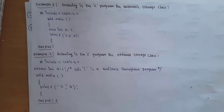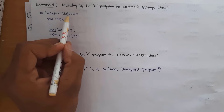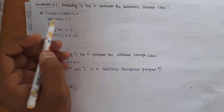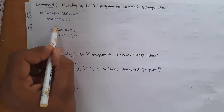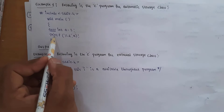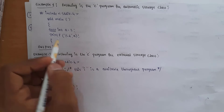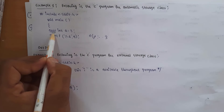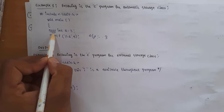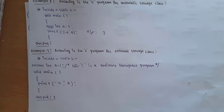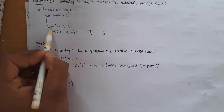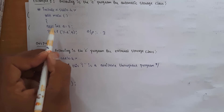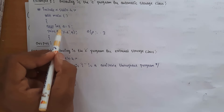Now I will explain programs. For auto: I written #include stdio.h, then void main, and inside I declared auto int a equal to 10. The variable a is stored in main memory, and printf %d comma a gives output as 10. If you want to use static, just replace auto with static. If you want to use register, write register int a equal to 10 — then this variable a is stored in the CPU register.